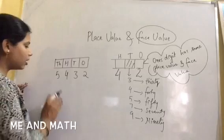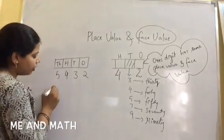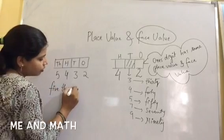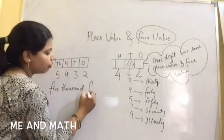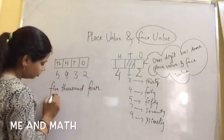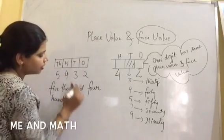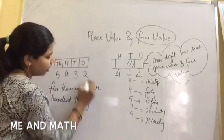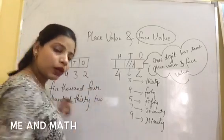Let's name this number. So if the five is at thousands place, we will write five thousand. Four at hundreds place: four hundred. Three at tens place: thirty. And two at ones place: two.